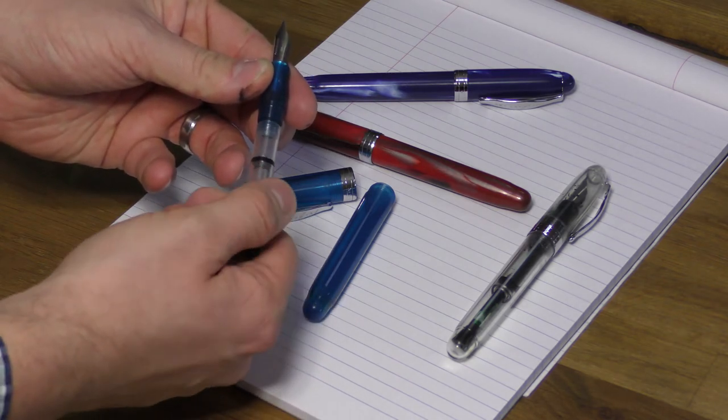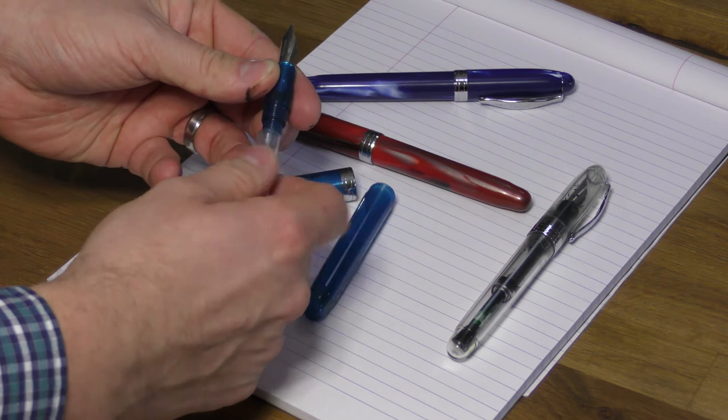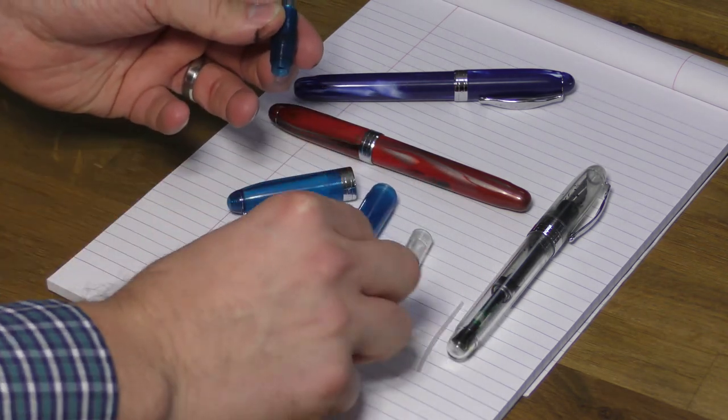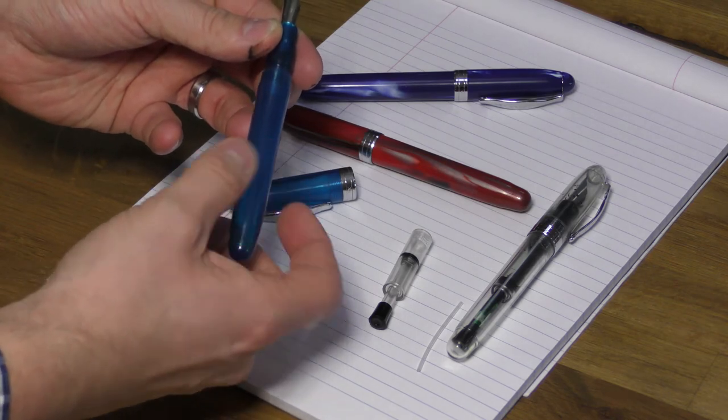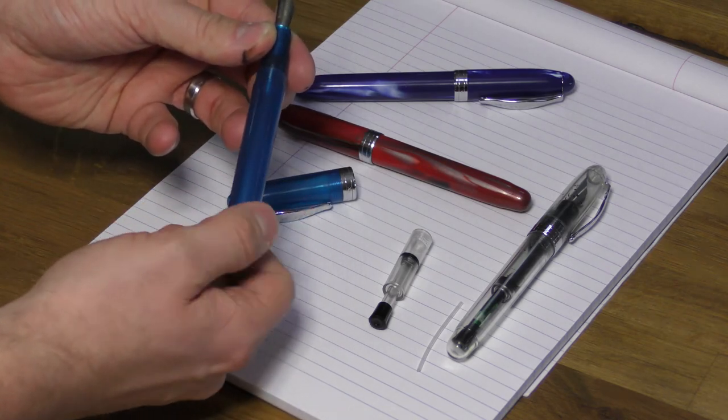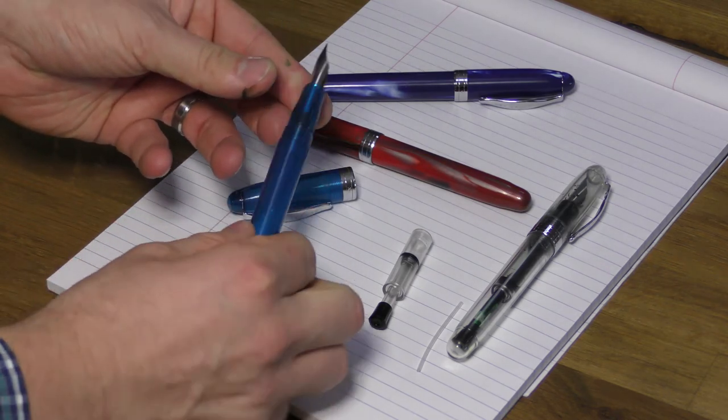One of the main draws of the Ahab is the ink capacity. You can fit around 1.8 mil of ink in the plunger, giving it around 2 mil of total ink capacity when you take into account the ink in the feed, which is quite incredible. But the eyedrop version gives it around 5 milliliters of ink.